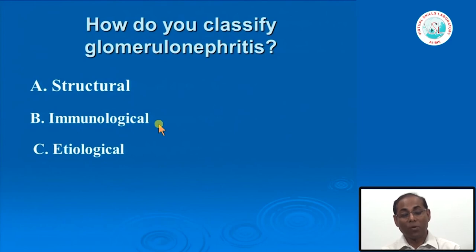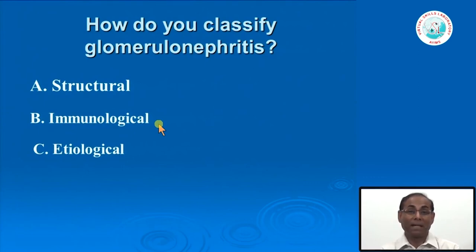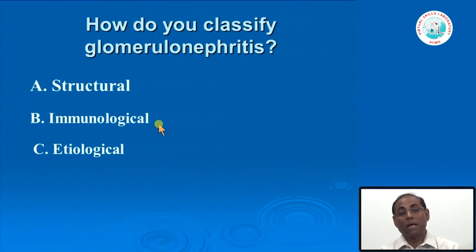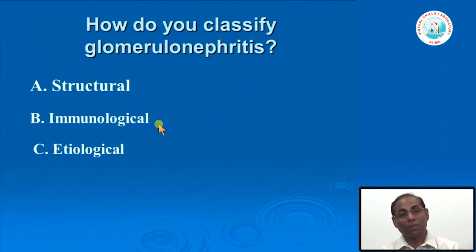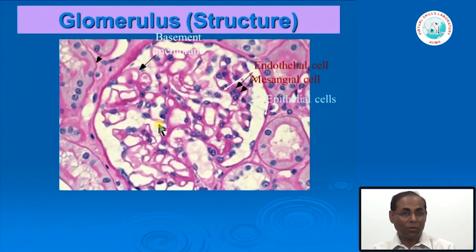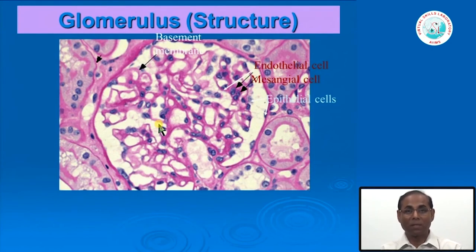It is important to know the immunological type of glomerulonephritis. We should also try to identify the etiology. For any secondary glomerulonephritis—say, when glomerular involvement occurs in systemic lupus erythematosus—we know the glomerular involvement is secondary to the systemic disease. Exploration of etiology is very important. For structural classification, we must remember what types of cells are present in the glomerulus.